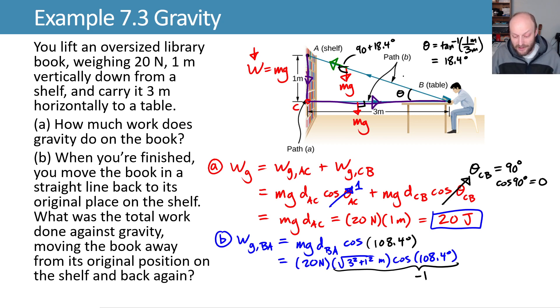So we did the geometry and you plug it in but you end up getting that the work done by gravity as you move the book back is equal to negative 20 joules. So gravity did 20 joules of work as the book moved down and then as the book moved back even though it took a different route it's still traveling the same vertical distance and we only care about vertical distance when we're talking about the force of gravity that's acting vertically.